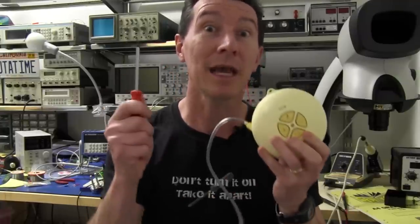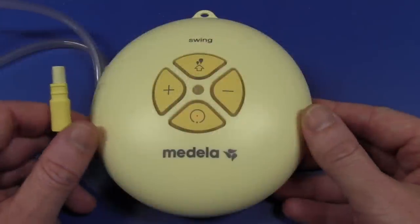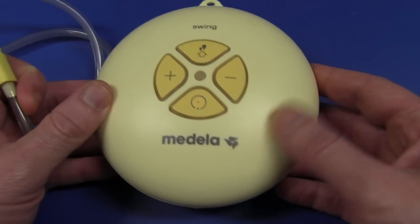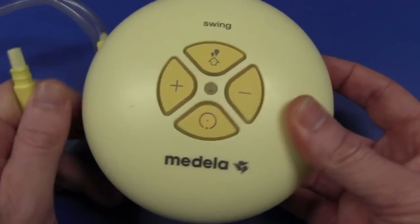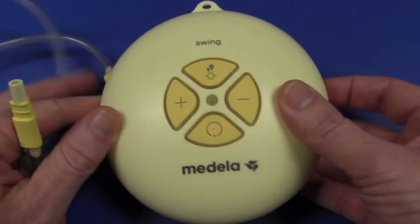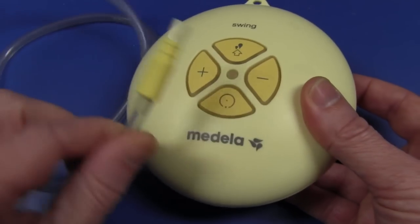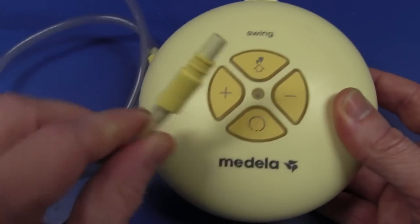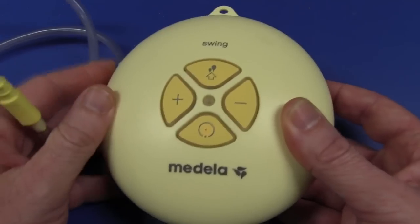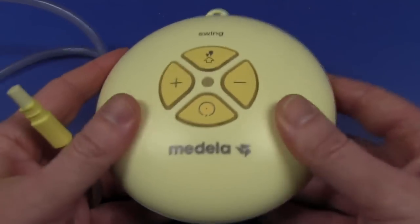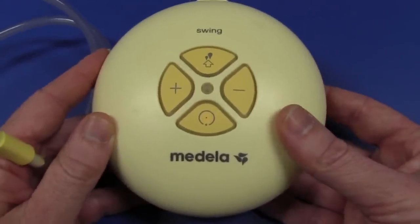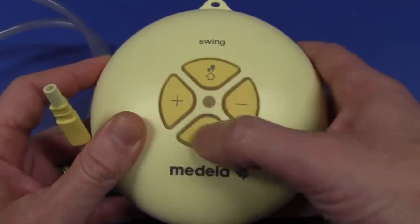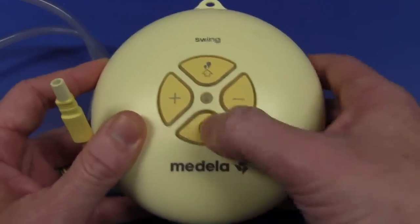You know what we say here on the EEVblog, don't turn it on, because we can't take it apart. And here it is, it's the Medela Swing. And this brand Medela is supposed to be the duck's guts. This is supposed to be the Fluke 87 of breast pumps. I guess you could say that, the de facto industry standard. It's got a tube here which attaches to the suction cup, which goes you know where, and it's made and designed and made in Switzerland.